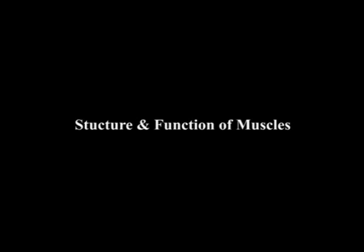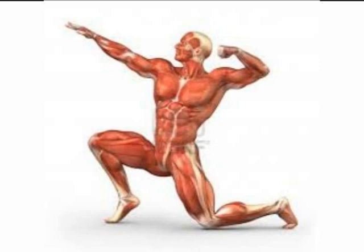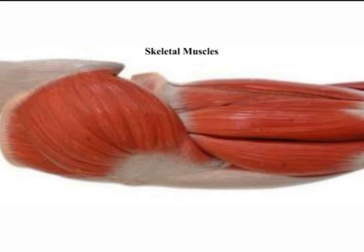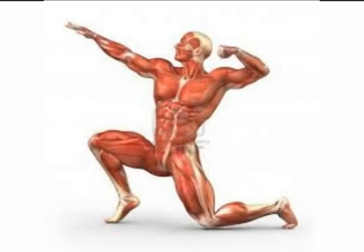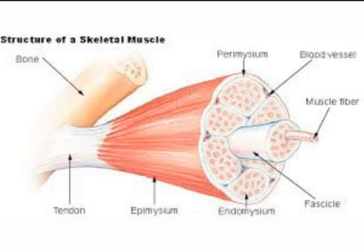Muscle is a tissue specialized for contraction. There are three types of muscles: skeletal muscles, smooth muscles and cardiac muscles. The skeletal muscles are attached to the skeleton and play an important role in locomotion. They are innervated by the voluntary part of the nervous system and are therefore known as voluntary muscles. When viewed under the microscope, their fibers are seen to have stripes running across them, for which reason they are called striated or striped muscle. Characteristically, skeletal muscle contracts and fatigues rapidly.